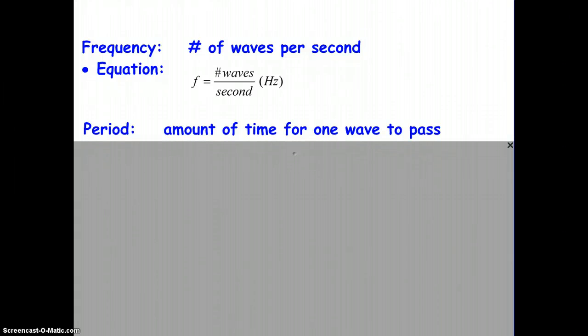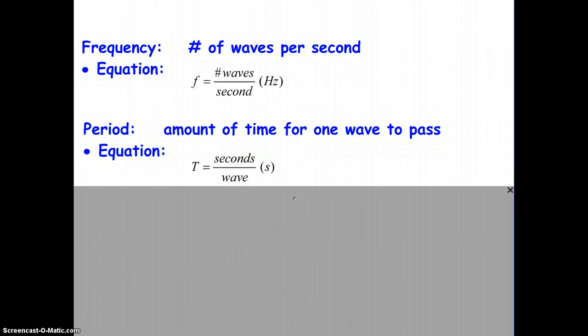Another wave quantity often used and discussed is period. And you're familiar with period from other units, meaning the amount of time for one event. Well, in this case, it's the amount of time for one wave to pass. From that definition, we get the equation for period. Capital T equals number of seconds per wave. And, of course, the unit is just in seconds.